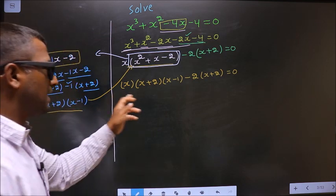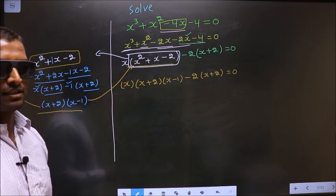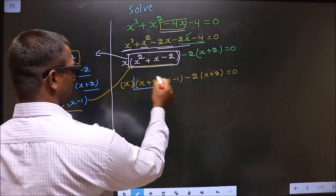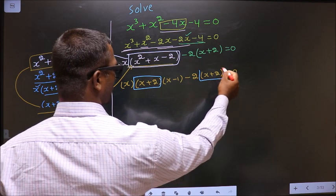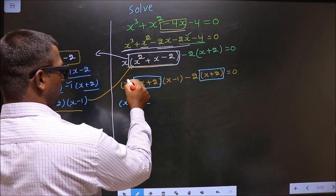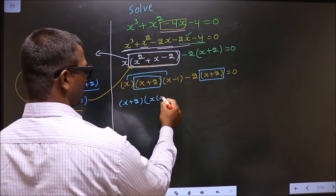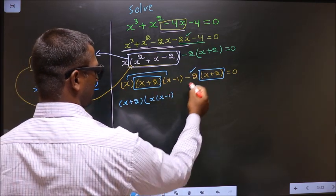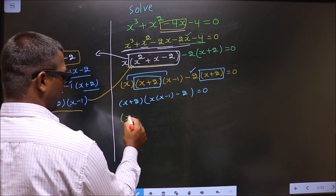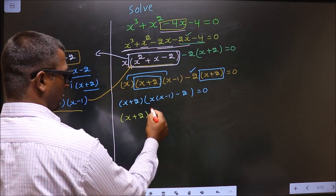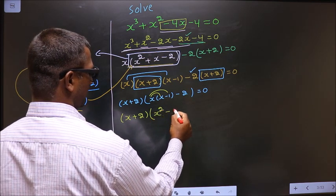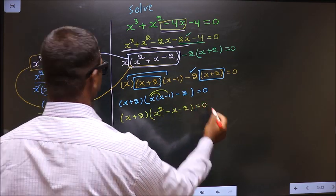Now from this entire equation, what you can take out common is x plus 2. So now you have x times x minus 1 and here minus 2 equal to 0. Now x plus 2 — here you open up the bracket in this way. So you get x square minus x minus 2 equal to 0.